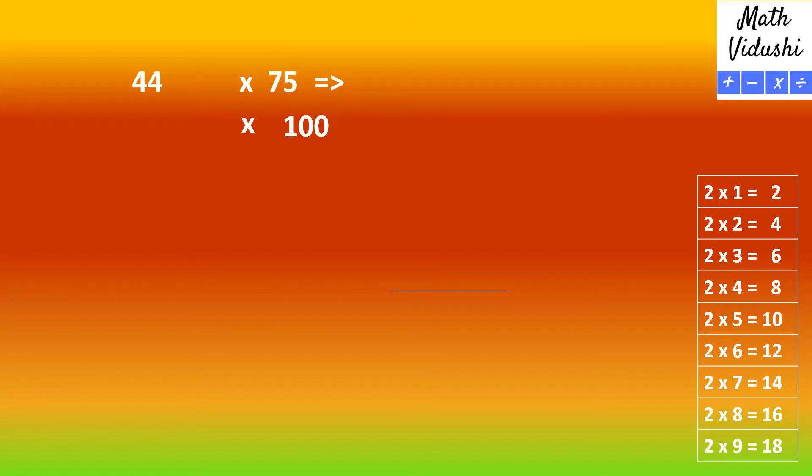We will take an example. So 44 multiplied by 75, you would first multiply by 100 which is very easy. You just have to add two zeros and get 4400.